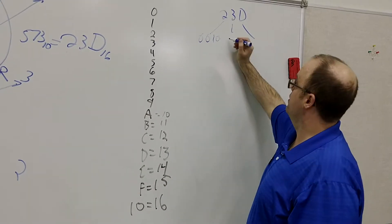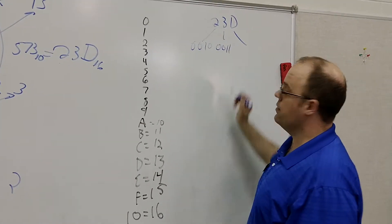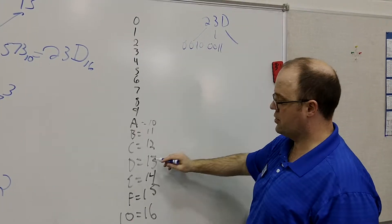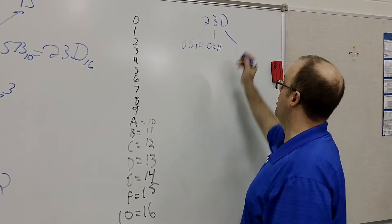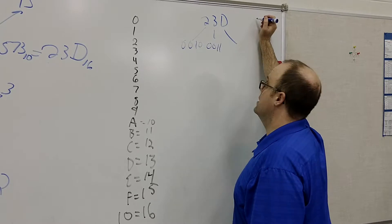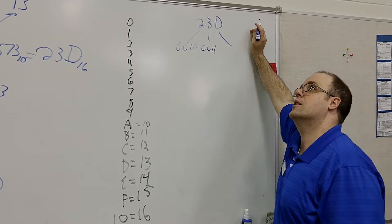What's this in binary? 0, 0, 1, 1. And then D is 13, so now we've got to figure out what binary 13 is, which is, so 8, 4, yeah, there it is.